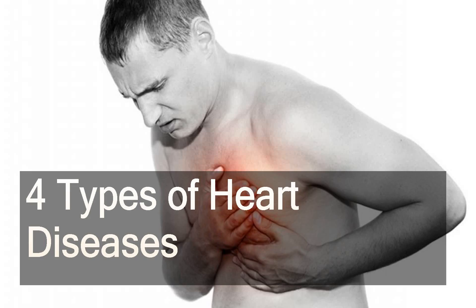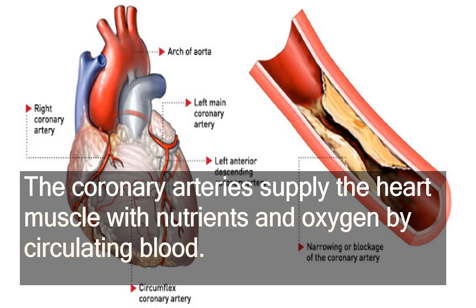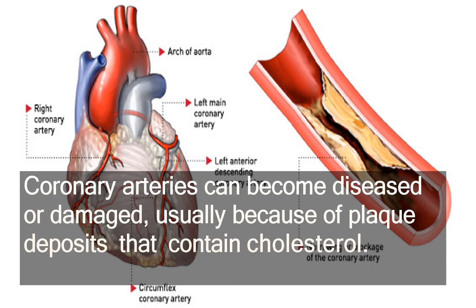Number one: coronary artery disease. The coronary arteries supply the heart muscle with nutrients and oxygen by circulating blood. Coronary arteries can become diseased or damaged, usually because of plaque deposits that contain cholesterol.